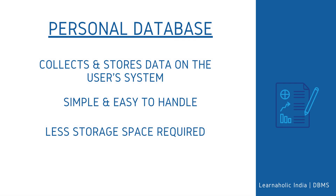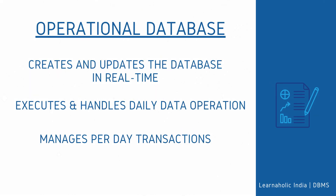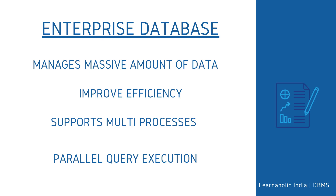The next type is Personal Database — collecting and storing data on the user's system. It is basically designed for a single user. Advantages include: it is simple and easy to handle, and it occupies less storage space as it is small in size. Next is Operational Database, which creates and updates the database in real-time. It is designed for executing and handling daily data operations in businesses. For example, an organization uses operational databases for managing per-day transactions. The last type is Enterprise Database, used by large organizations to manage massive amounts of data. It helps organizations increase and improve their efficiency, and allows simultaneous access to multiple users. An advantage is that multiprocessors are supported, allowing parallel queries to be executed on the system.